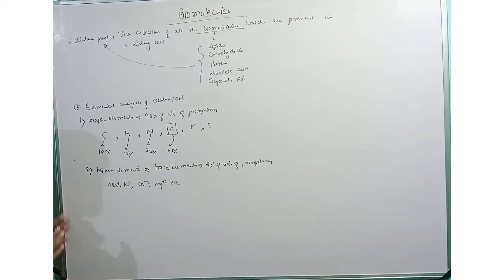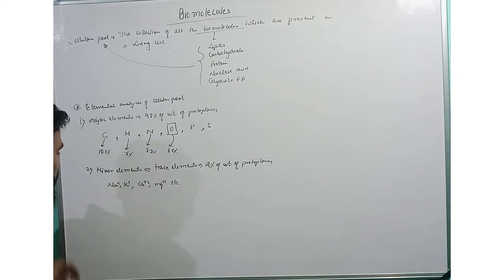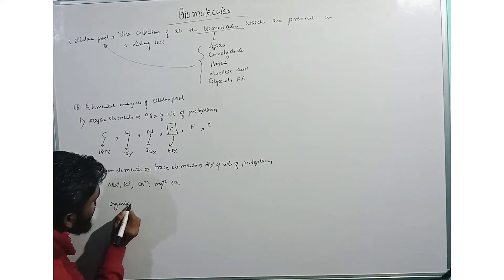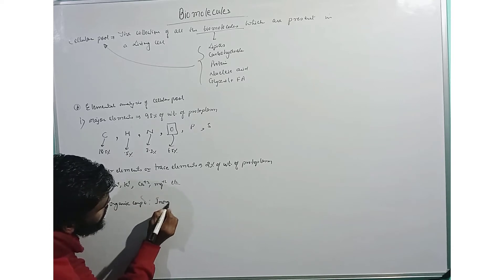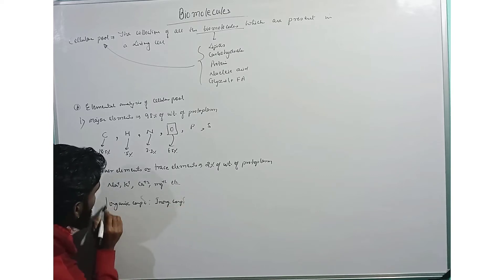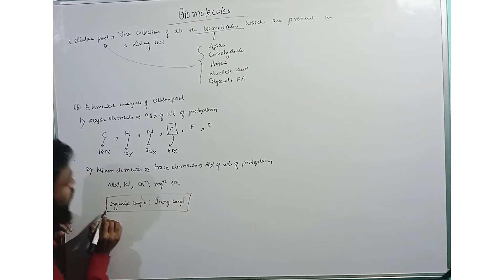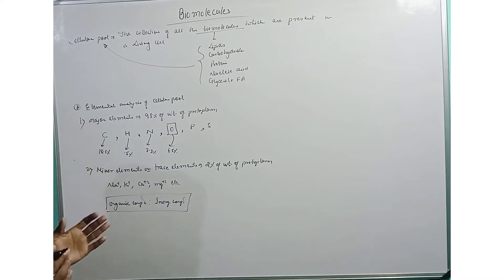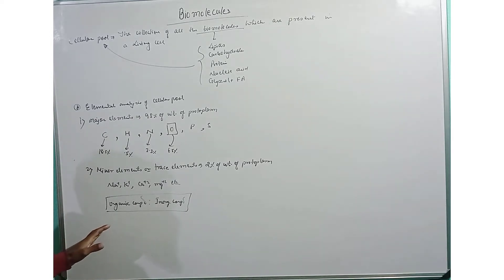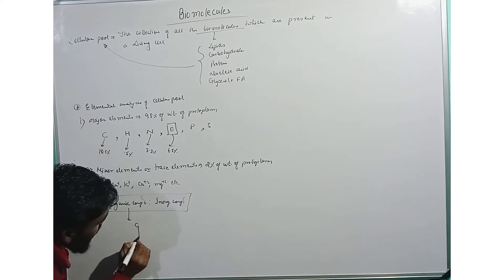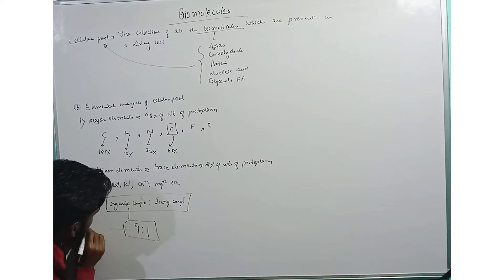After the elemental analysis of cellular pool, we find that different kinds of compounds are also found in the cellular pool — such as organic compounds and inorganic compounds. When we compare these, organic compounds are very much more than inorganic compounds — organic compounds are nine times more as compared to inorganic compounds.